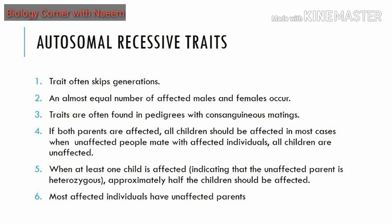Autosomal traits can be autosomal recessive or autosomal dominant. Let us see the properties of autosomal recessive traits — the properties on the basis of which you can decide that a trait is autosomal recessive. First of all, recessive traits often skip generations, meaning two parents not showing a particular trait can have an offspring with that trait. For example, in the case of albinism, two normally pigmented parents can have an albino child.